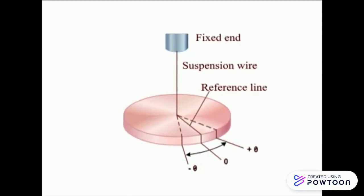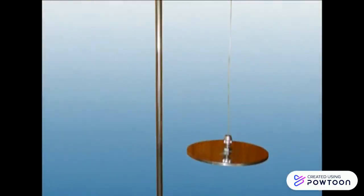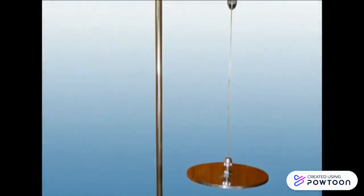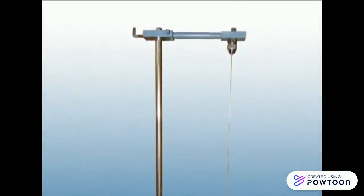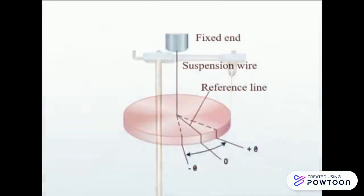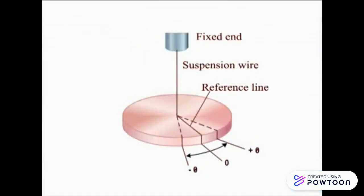Torsion pendulum consists of a massive disc, cylinder, or dumbbell suspended by a thin uniform wire which is firmly fixed to a rigid support. The mass is rotated through a small angle about the wire at the axis and released. The disc makes torsional oscillations.